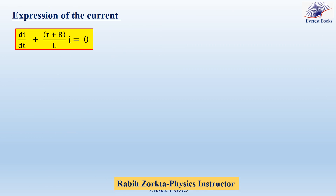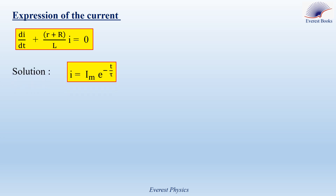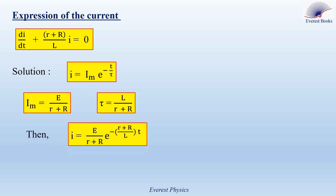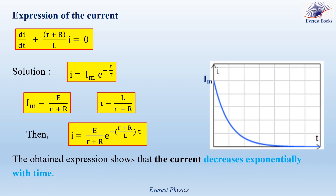Expression of the current during its decay: referring to the differential equation obtained previously, the solution is given by i = Im · e^(−t/τ), where Im and τ are constants. Im is the maximum value of the current given by E/(r + R), and τ is the time constant of the circuit given by L/(r + R). So the current during its decay is i = [E/(r + R)] · e^(−(r+R)/L · t). This expression shows that the current decreases exponentially with time, starting at maximum Im and decreasing to zero.